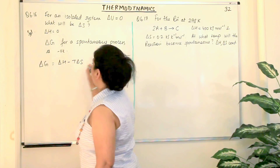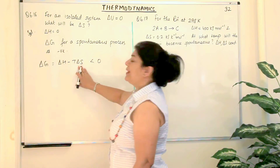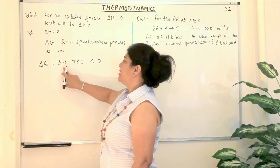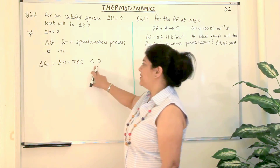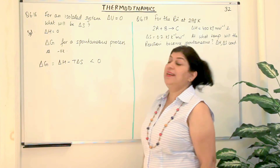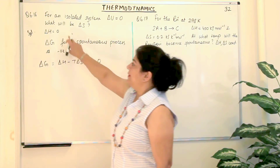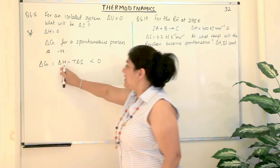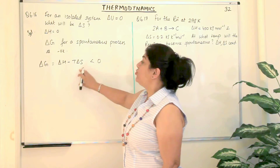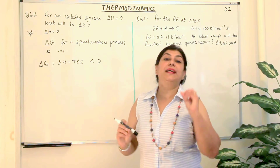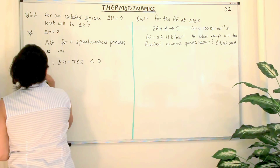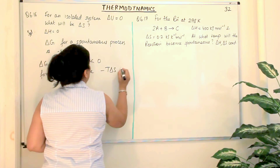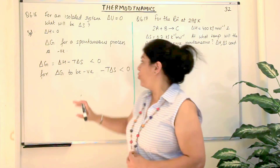And delta G is negative, which means it is less than 0. Therefore, delta H minus T delta S should also be less than 0. We know already that delta H is 0 — there is no exchange of heat taking place because the system is isolated. So if delta H is 0, for delta G to be negative, minus T delta S should be a negative value.